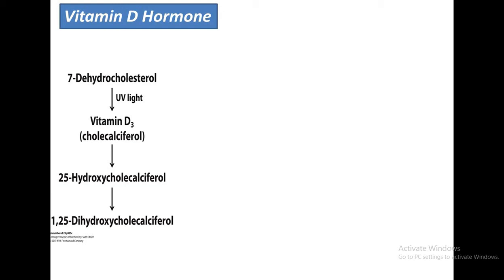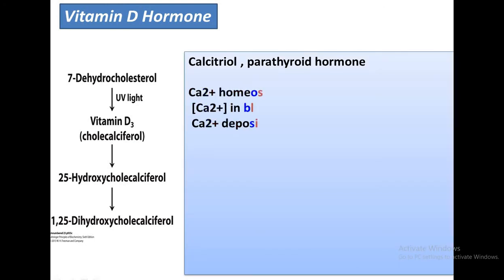When vitamin D is produced, it undergoes hydroxylation first in the liver and then in the kidney. In the liver, hydroxylation occurs at the 25-position, and after the kidney it is at the 1-position, which is the active form — also called calcitriol. Calcitriol, along with parathyroid hormone, regulates calcium homeostasis and calcium concentration.